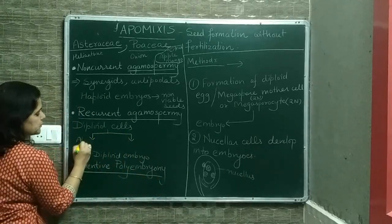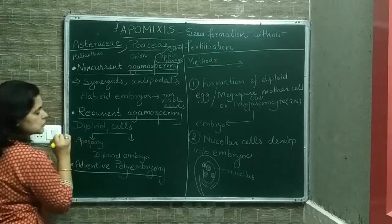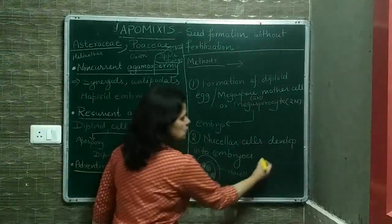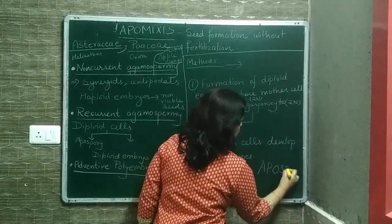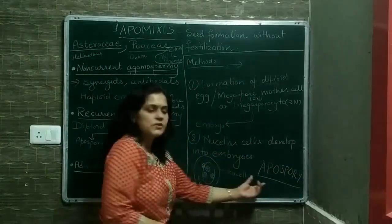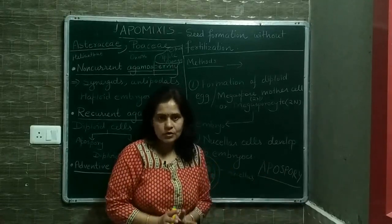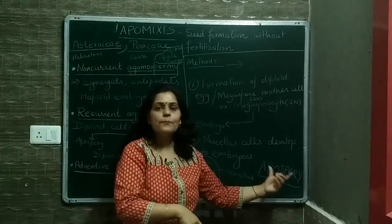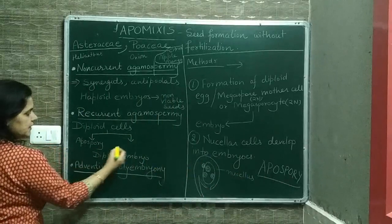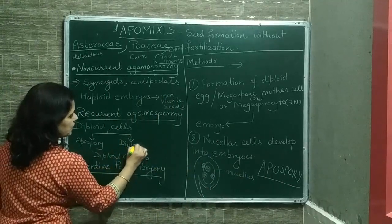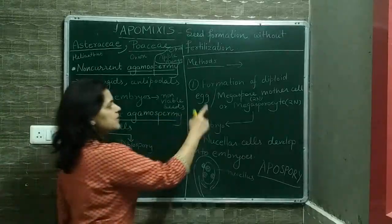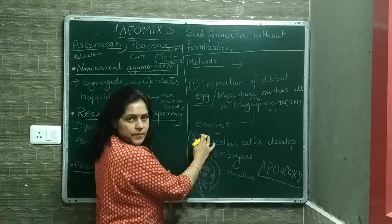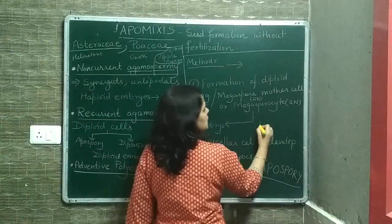One type is apospory. In apospory, nucellar cells develop into embryos — apomixis without formation of spores, since megaspores are not being formed here. The second type is diplospory, where a diploid egg is formed — that is, the megaspore mother cell directly forms an embryo after undergoing mitosis, skipping meiosis. So diplospory involves formation of diploid eggs.